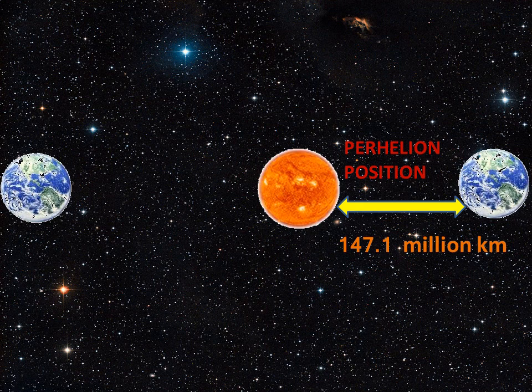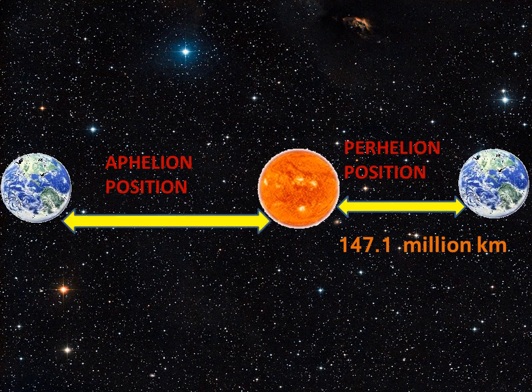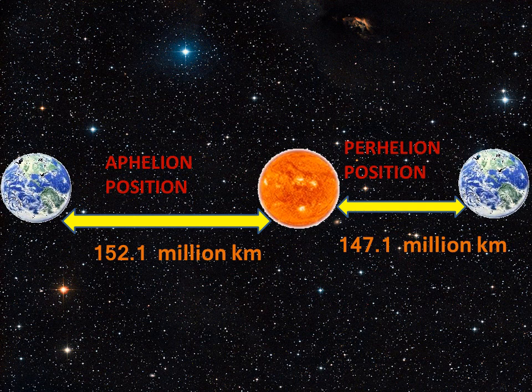Whereas, when the earth is in aphelion position, the distance between them will be far. So, the distance is about 152.1 million kilometers.